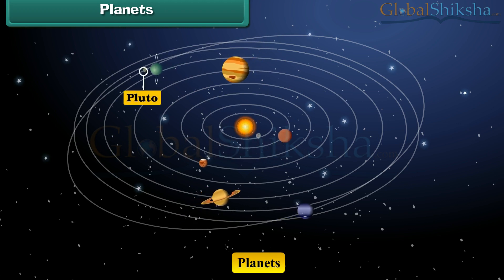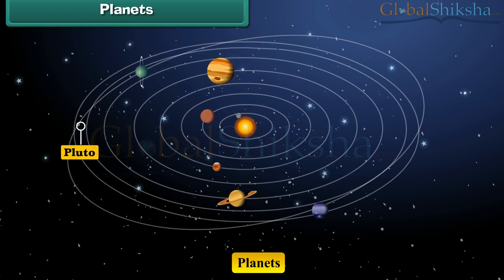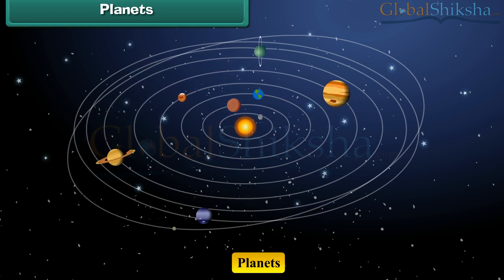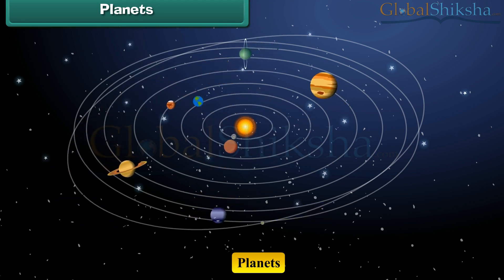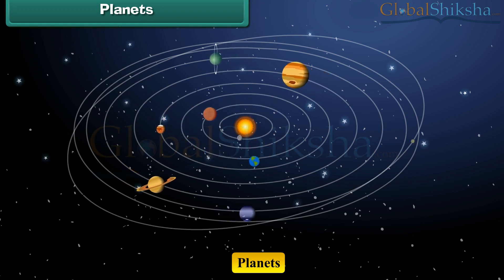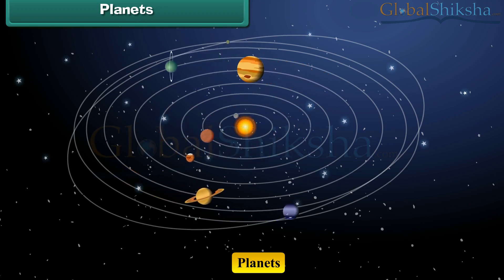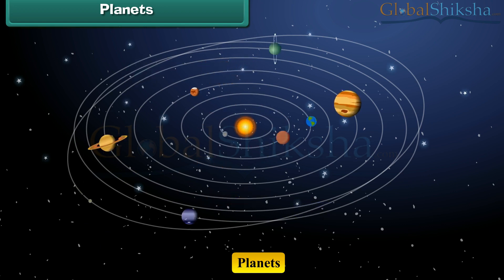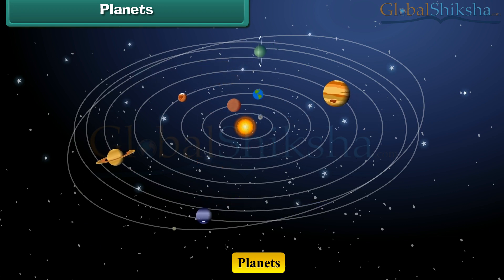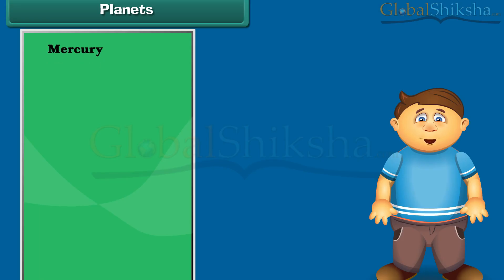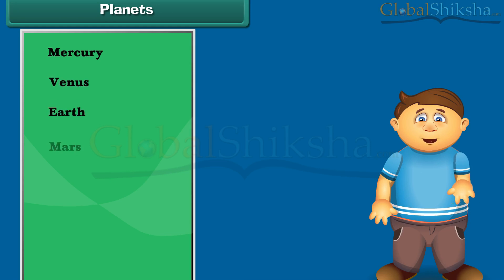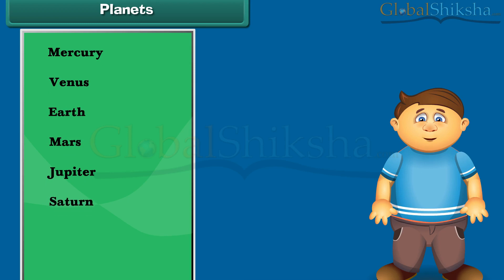Before some time, Pluto was considered as the ninth planet of our solar system. But according to recent research, it is no more counted as the ninth planet. So there are only eight planets in our solar system. These are Mercury, Venus, Earth, Mars, Jupiter, Saturn, Uranus and Neptune.